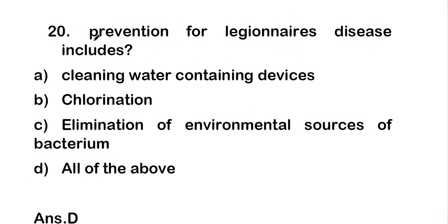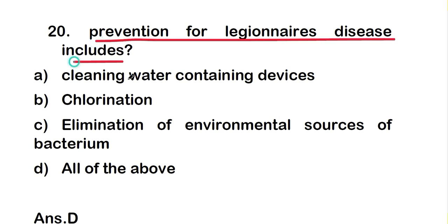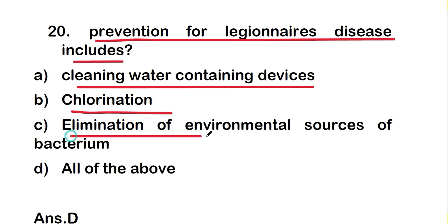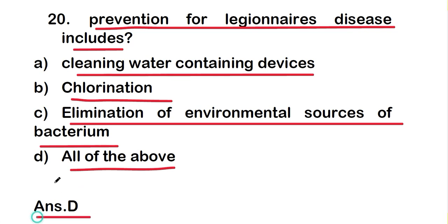Question 20: prevention of Legionella disease includes cleaning water-containing devices, chlorination, elimination of environmental sources of the bacterium, or all of the above. The right answer is option D — all of the above. Prevention of Legionella disease includes all these measures. These are all 20 questions of part one of the MCQs on bacterial disease. Thank you for watching.